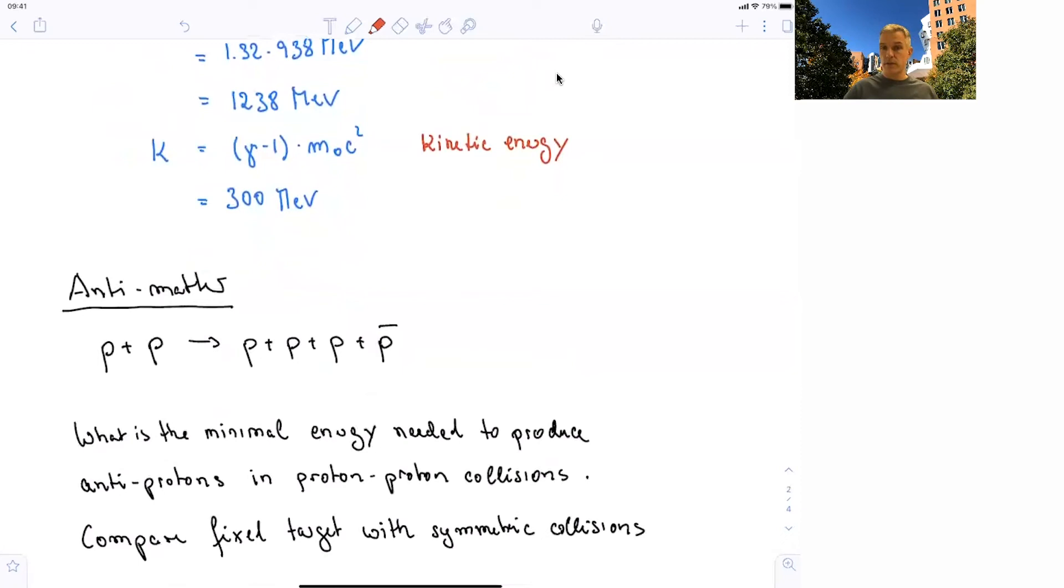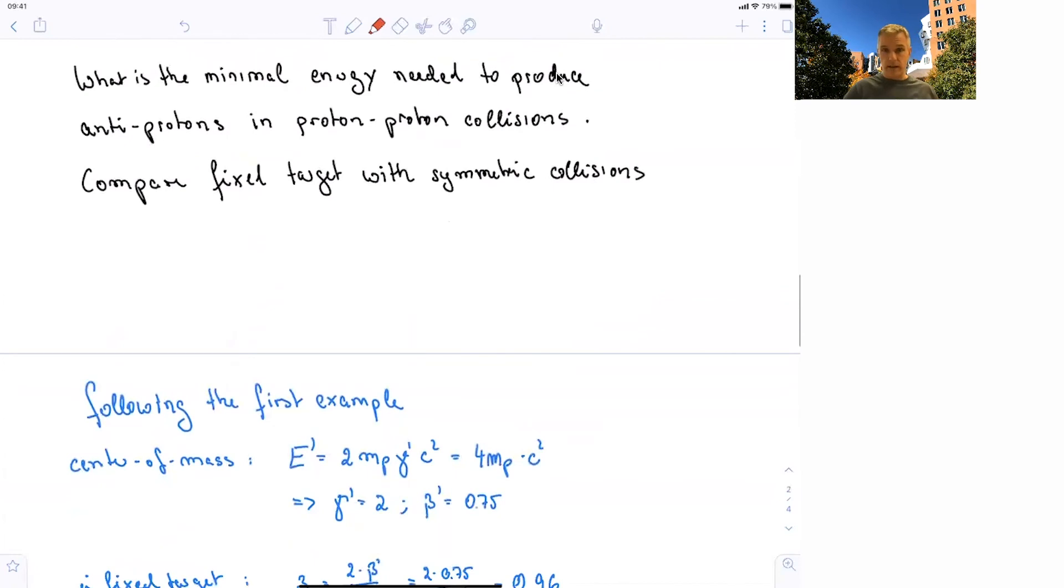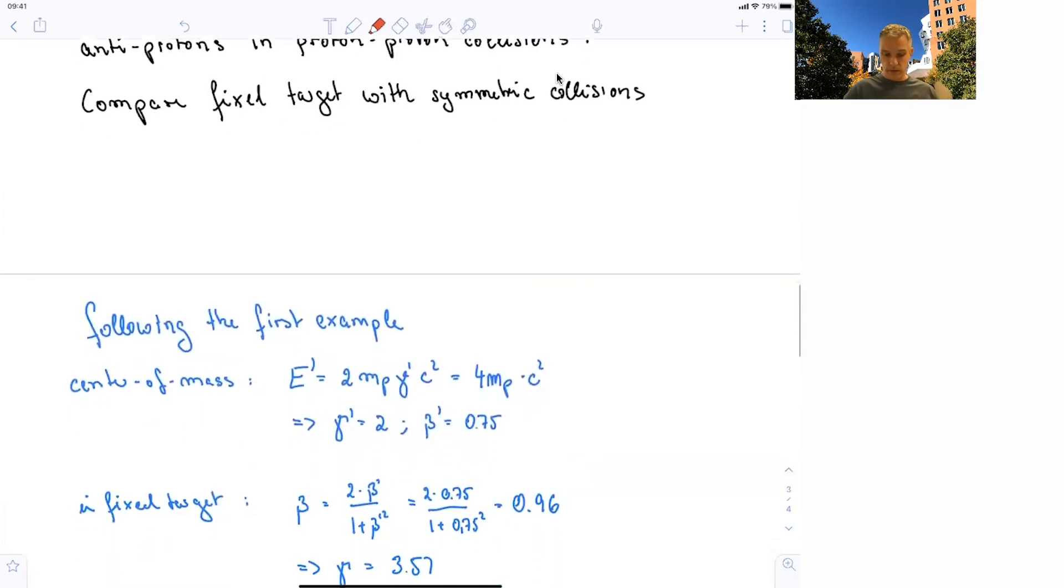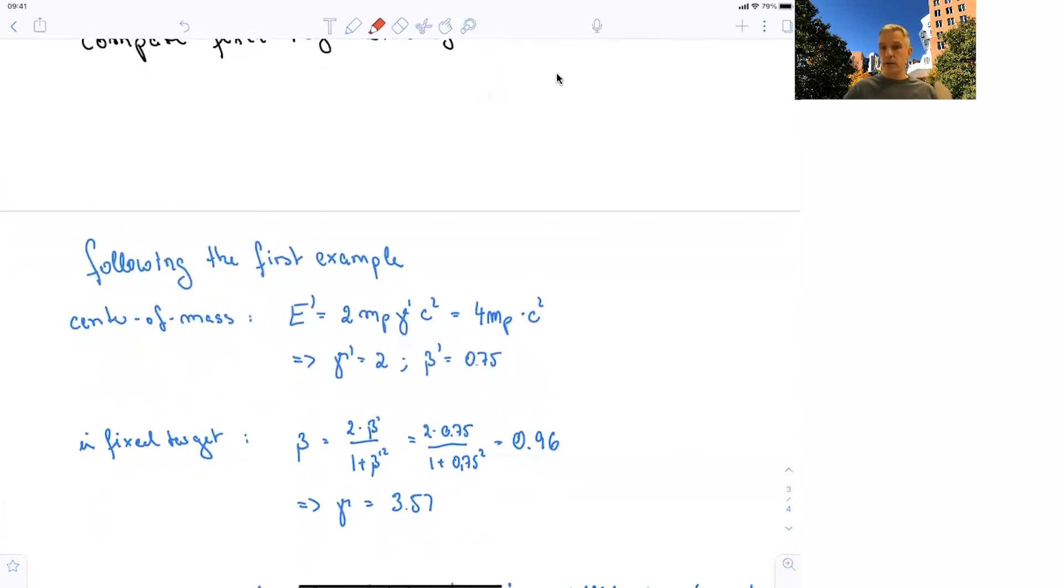OK, this works very similar as in the previous problem. But what we want to do here is compare the fixed target with symmetric collisions. So again, the question is, what is the minimal energy needed in order to produce antiprotons in proton-proton collisions? So following exactly the same procedure as before, in the center of mass energy, the energy is 2 times the mass of the proton times gamma times c squared. And that's 4 times the mass of the proton. Gamma prime, so the gamma factor in the center of mass frame is 2, beta is 0.75. And then we just do the very same thing again. And then we calculate the velocity in the fixed target frame. And we find the velocity of beta of 0.96 and gamma of 3.57.